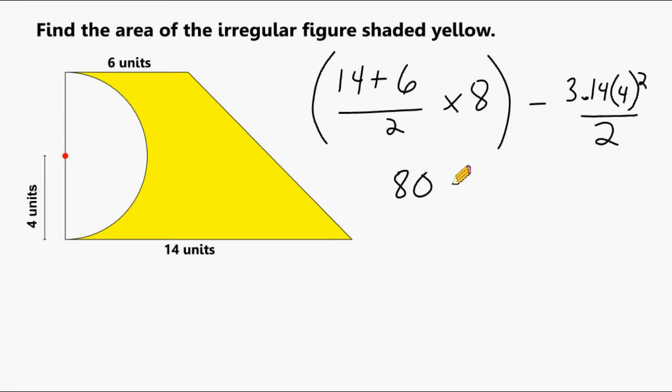All right, now what we have to do is subtract from 80 the area of the semicircle. So the first thing we have to do is square our radius. We're going to take 4 and raise that to the second power, which is 16. And then we have to multiply 16 by 3.14 and then divide by 2.